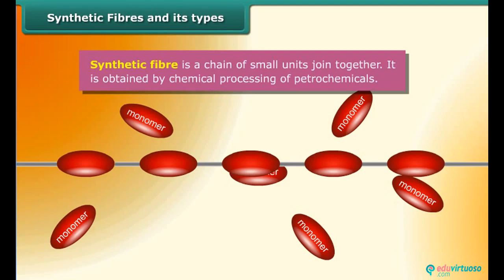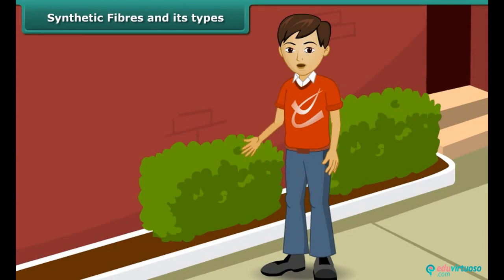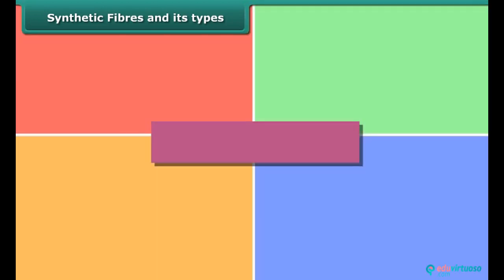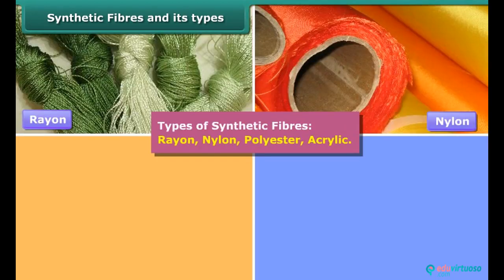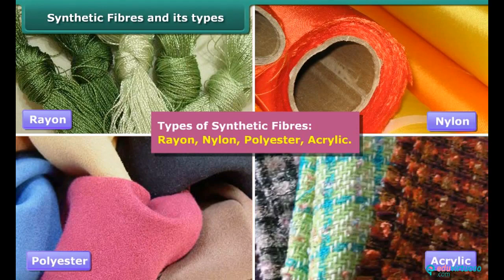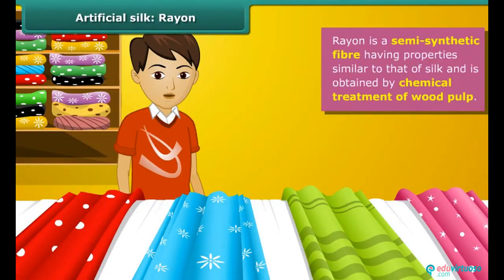Synthetic fiber is an example of a polymer. Synthetic fibers are obtained by chemical processing of petrochemicals. Can you recall the various types of synthetic fibers which you use in your everyday life? Depending upon the types of chemicals used for manufacturing synthetic fibers, they are classified as rayon, nylon, polyester and acrylic.